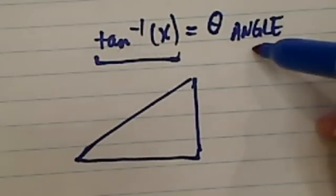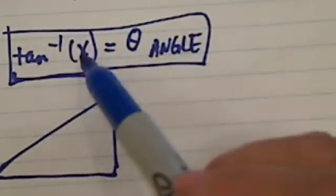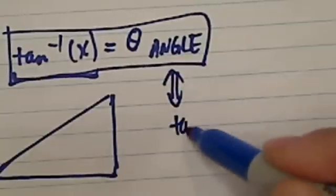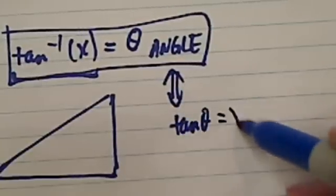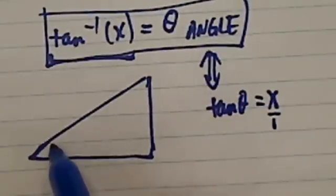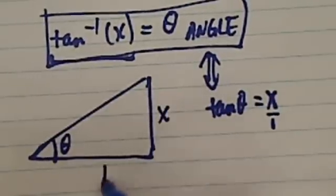This one is really saying, this whole box, what it's really saying is this. Tangent inverse of x is equal to this. That's the equivalent of saying tangent of this theta is equal to x, x over 1. From there, you can say, well, if this angle is theta, tangent of this theta should be x over 1.